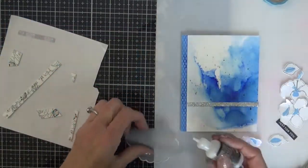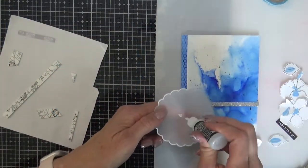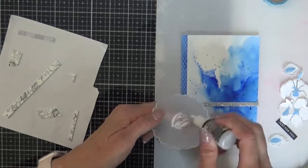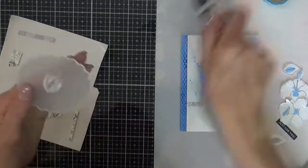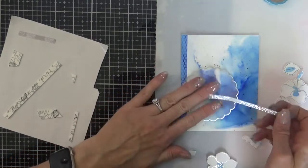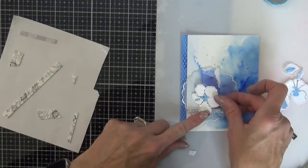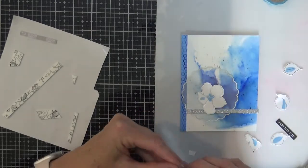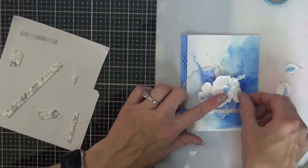I'm using liquid glue to adhere the vellum to the card and then I'll remove the backing from the glitter strip and adhere that to the card as well. Then I've added some instant dimension foam tape to the back of the flowers, leaves, and sentiment strip, and then I will adhere those to the card.